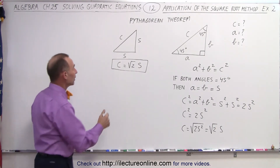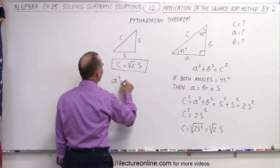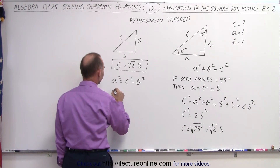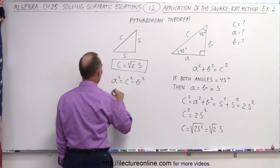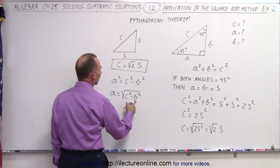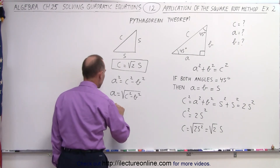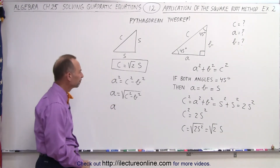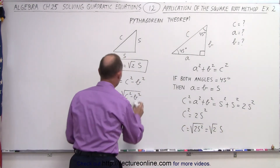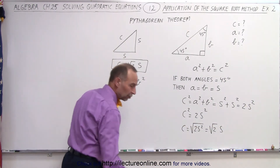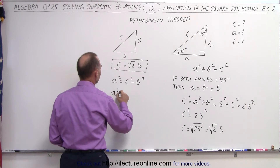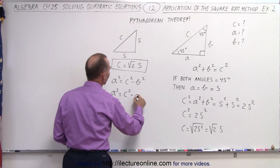If we now solve this for A, we can say that A squared is equal to C squared minus B squared. Before taking the square root of both sides, I'm going to replace B by A, since A and B are equal to each other. So I can say that A squared is equal to C squared minus A squared.